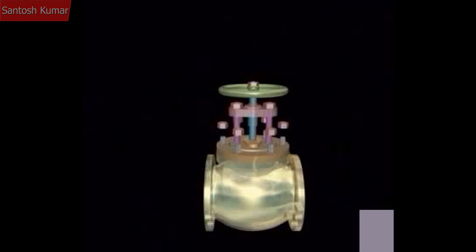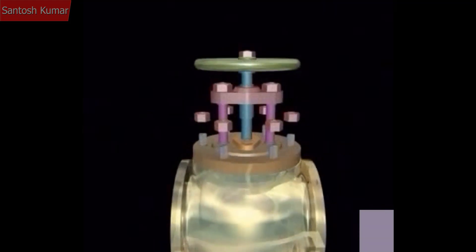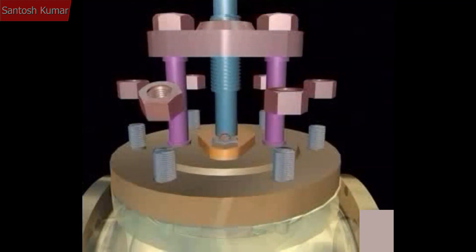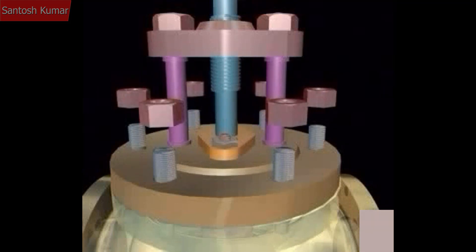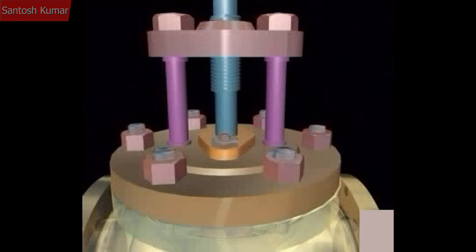By rotating the hand wheel, the valve is lifted off its seat, thus admitting fluid flow from the inlet side to the outlet side.